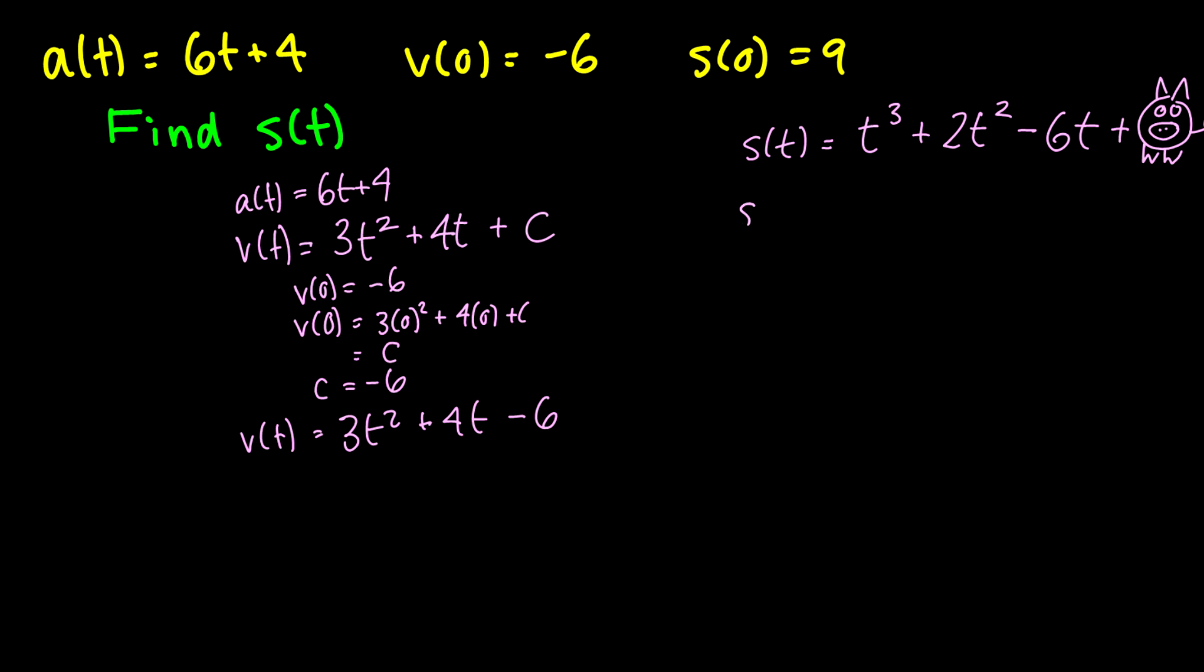Okay we know that s(0) = 9 so let's plug 0 into all of our t's which we're going to end up with piggy here. See how fast I can draw this.